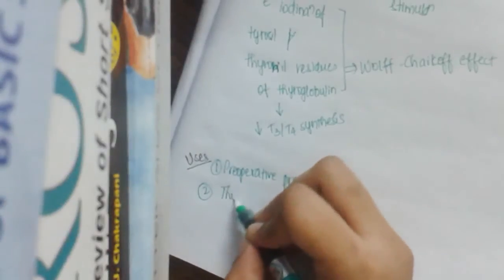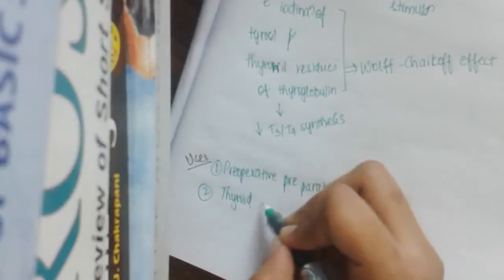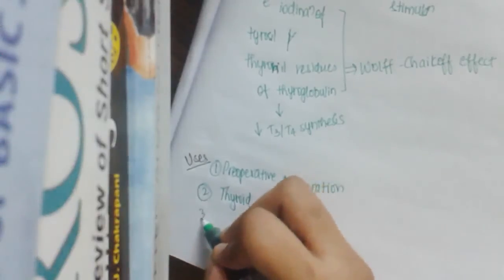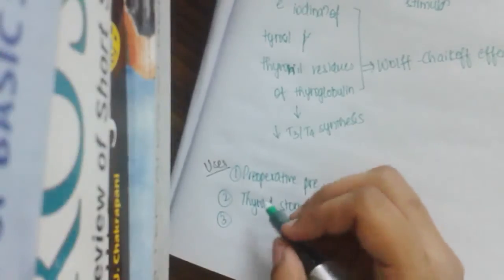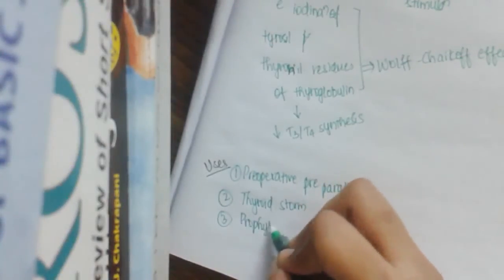The second use is in thyroid storm, which is an emergency situation where it is necessary for controlling it faster. The third one is prophylaxis of endemic goiter.